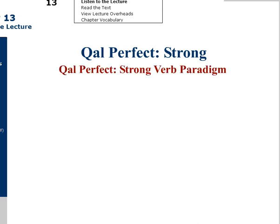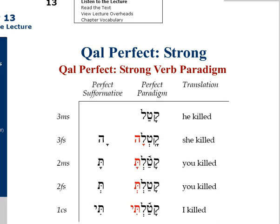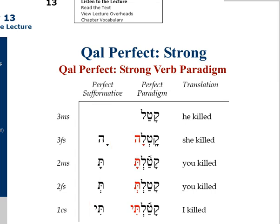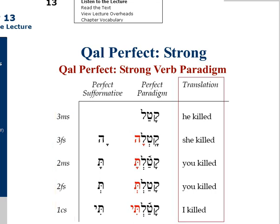In 13c, we give the full paradigm for the qal-perfect of the strong verb katal, kof-tet-lamet. Let's examine the layout of this graphic — this is handout 13c. The full perfect paradigm appears in the middle of the page, with the verbal subformatives given in red. To the left of the paradigm, we have isolated just the subformatives or inflectional endings. Person, gender, and number of each form is identified on the far left. On the far right, we have translated each form.